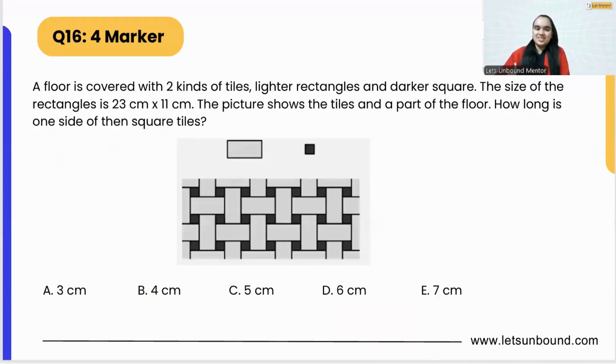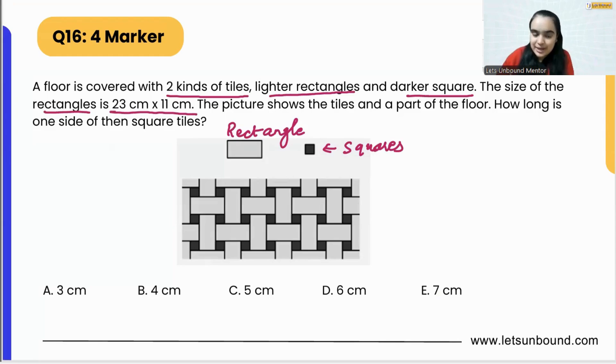The question is: a floor is covered with two kinds of tiles, lighter rectangles and darker squares. So we are having rectangles and squares. The size of the rectangle is 23 times 11, so that means the longer side is 23 centimeters and the shorter one is 11 centimeters.